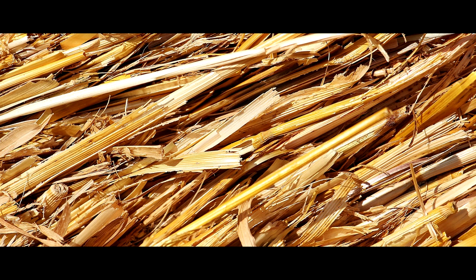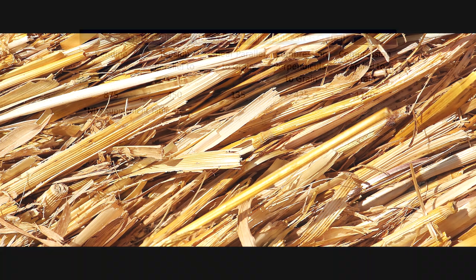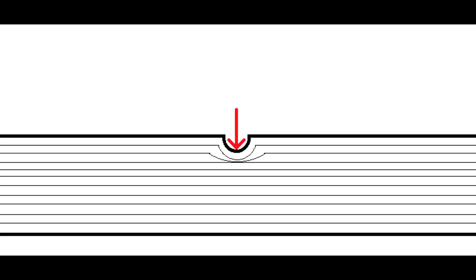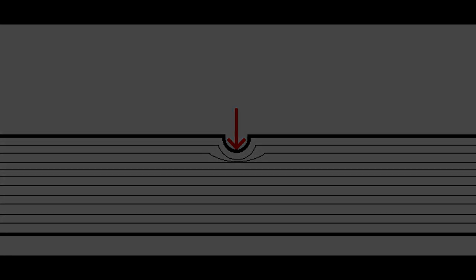In truth, if you dig into the literature, you find the compression strength perpendicular to grain is actually not a true stress limit. Rather, it is more of a rated limit based on allowable deflection. We allow or define a certain amount of crushing perpendicular to grain as allowable, and the stress required to produce that is defined as our allowable compression perpendicular to grain stress. It's really more of a deflection limit — a stress based on a deflection limit — than a true allowable stress level.